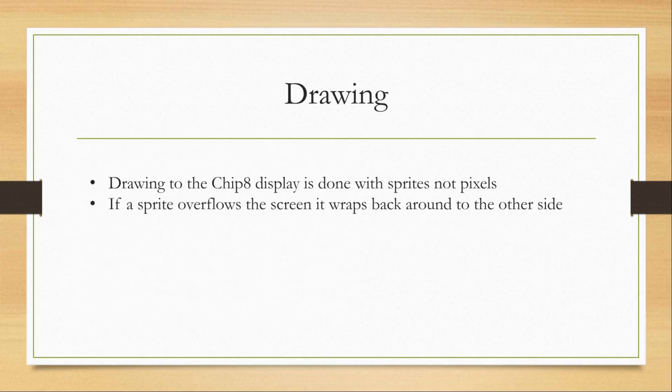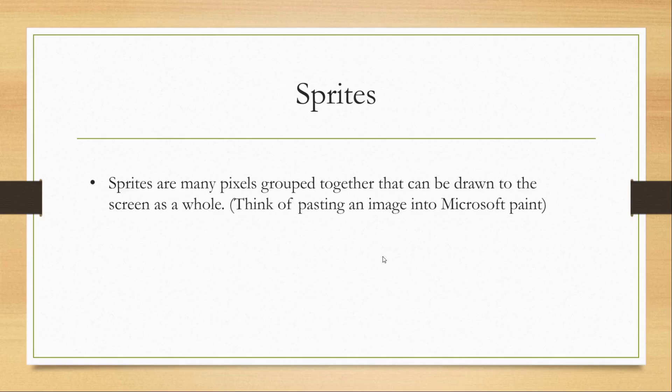Drawing to the Chip 8 display is done with sprites, not pixels. When you draw a sprite to the display and it goes out of the screen bounds — so x is above or equal to 64, or y is above or equal to 32 — it wraps back around to the other side. Think of Pac-Man: when you go through one side, Pac-Man comes out the other side. Sprites are many pixels grouped together that can be drawn to the screen as a whole — think of copying and pasting an image into Microsoft Paint.